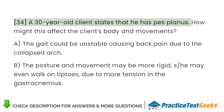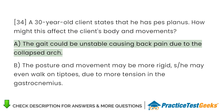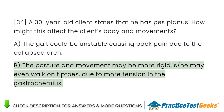A 30-year-old client states that he has pes planus. How might this affect the client's body and movements? A. The gait could be unstable, causing back pain due to the collapsed arch. B. The posture and movement may be more rigid, as he may even walk on tiptoes, due to more tension in the gastrocnemius.